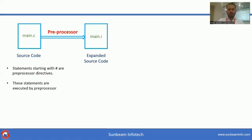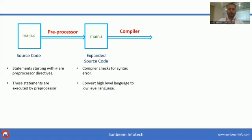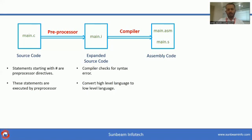That's why the output of the preprocessor is called expanded source code. In the second step, this expanded source code is given to the compiler. The compiler mainly does two things: it checks for syntax errors, and it converts high-level language to low-level language. We get assembly code as output of the compiler. In assembly code, the extension is .asm for Windows and .s for Linux.